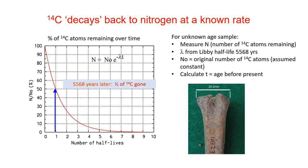After one half-life, which is approximately 5,568 years, half of that carbon-14 will be gone. So for an unknown age sample, we can measure N — the number of carbon-14 atoms remaining — and we have the parameter lambda from the Libby half-life of 5,568 years. We get the number of original atoms from measuring a standard that represents the atmosphere, and then we can calculate the age before present.